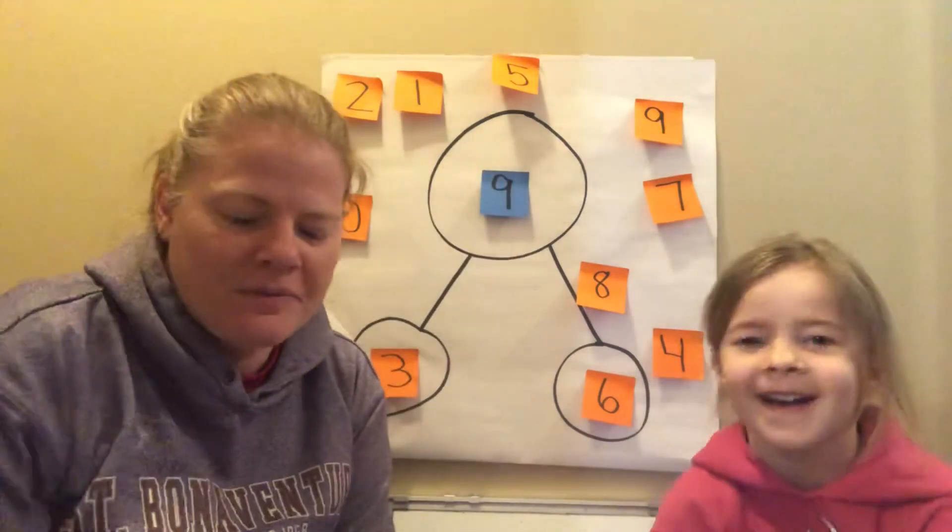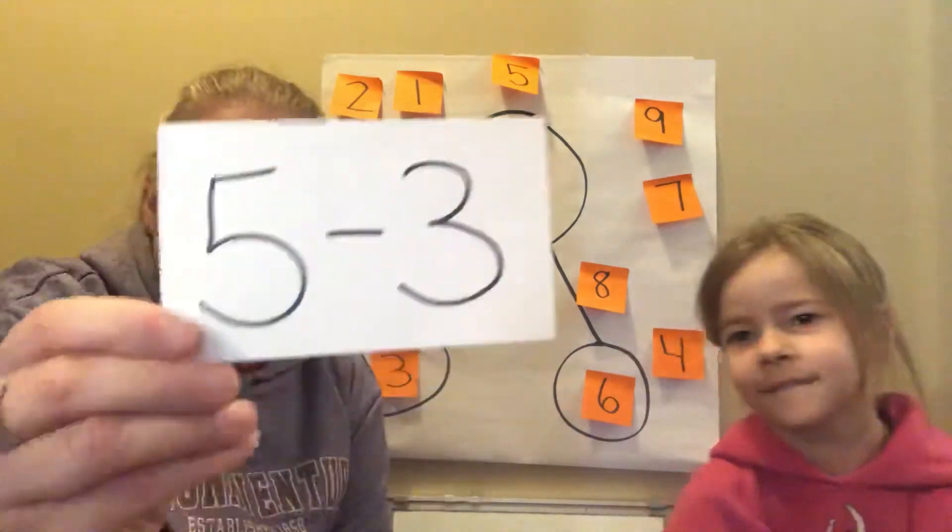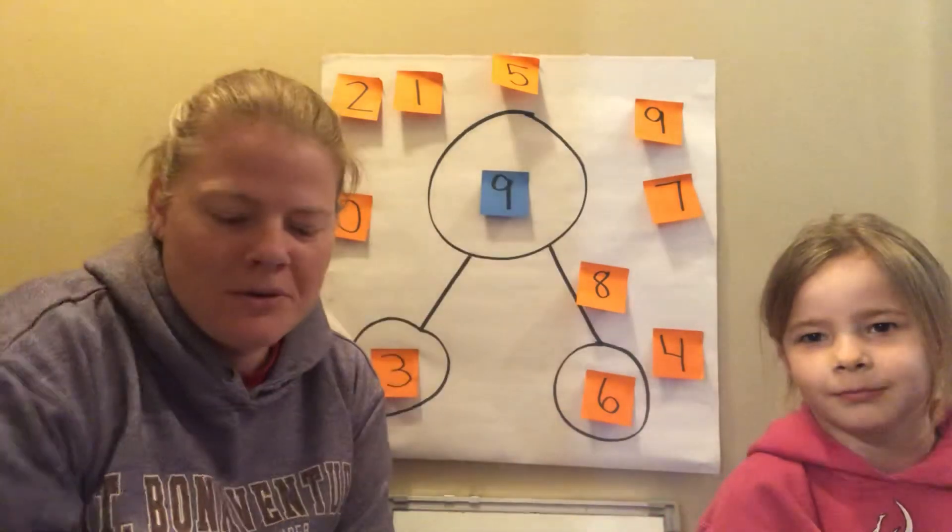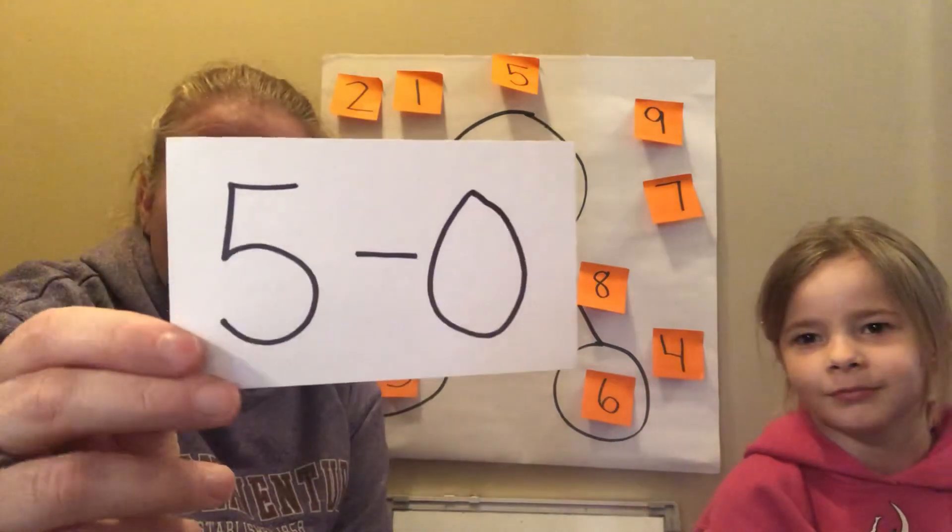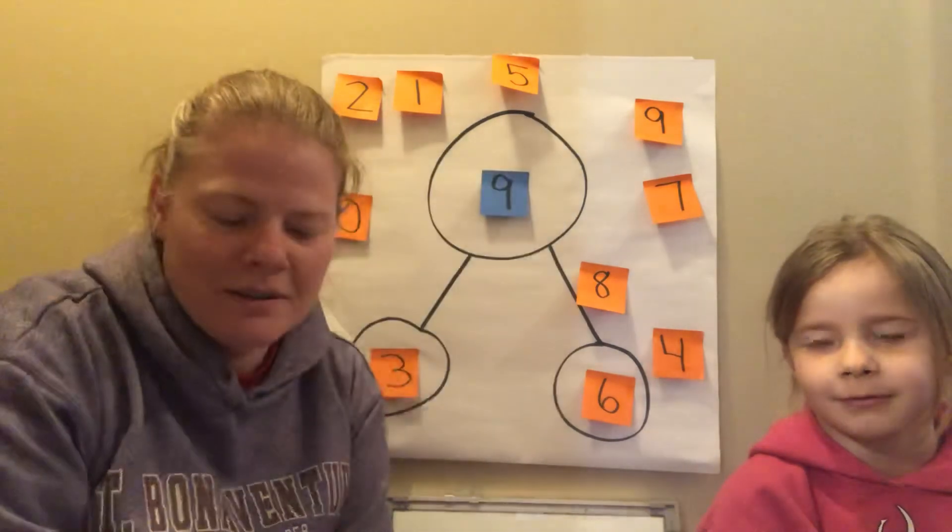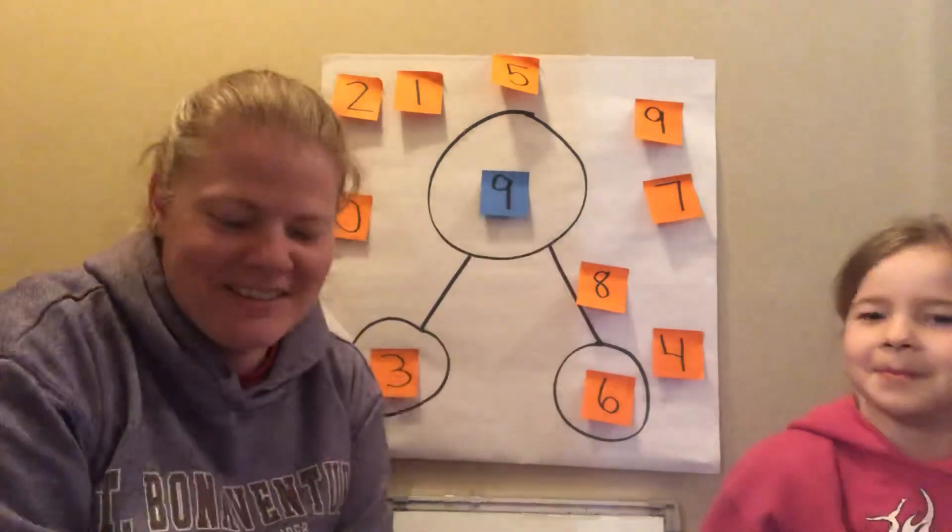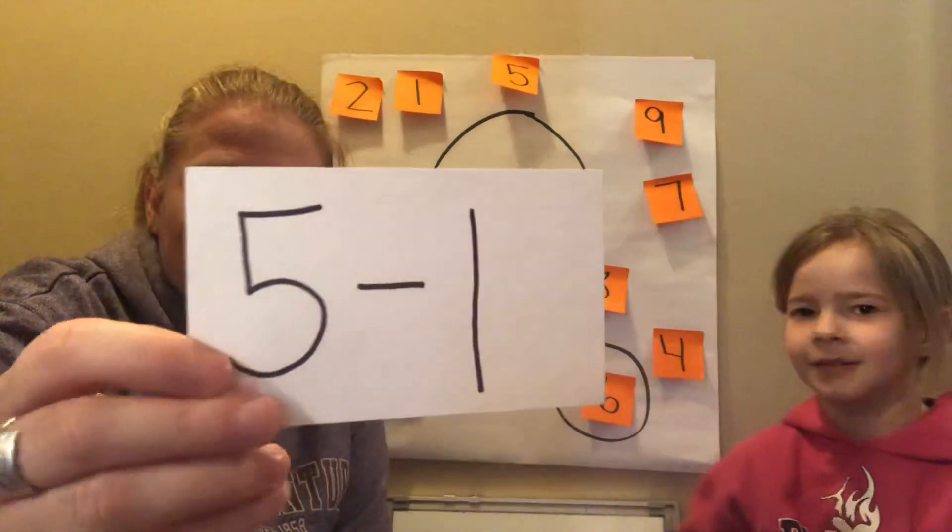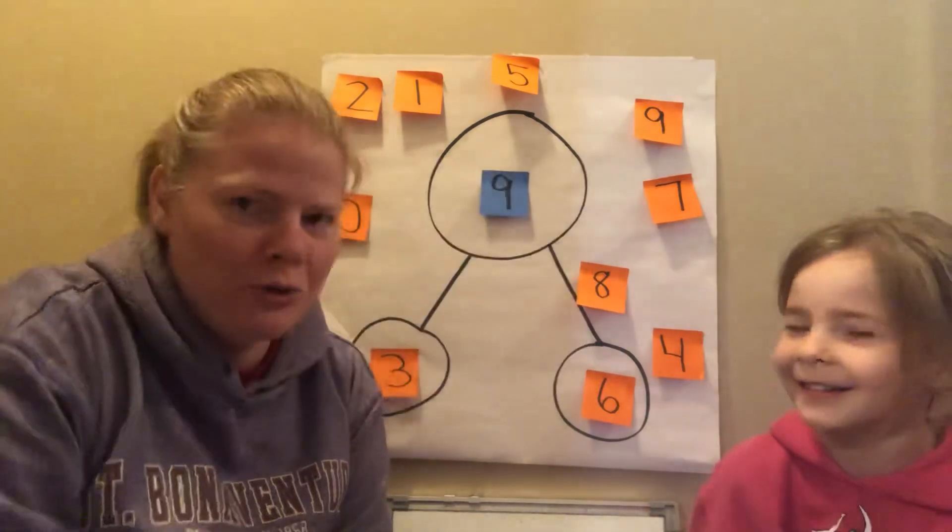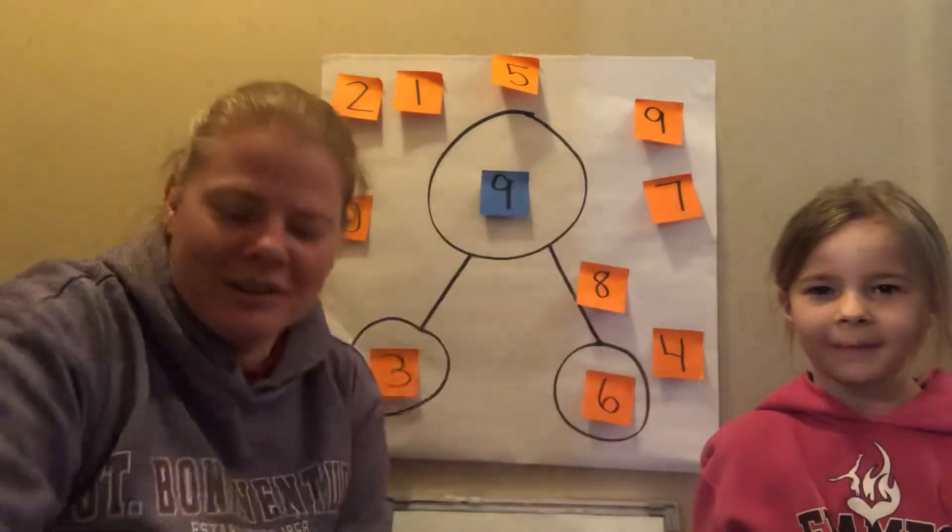Five minus three equals? Two. Five minus zero equals? Five. Five minus five equals? Zero. Five minus one equals? No. Four. Oh shoo. Two. And five minus four equals? One. Good.